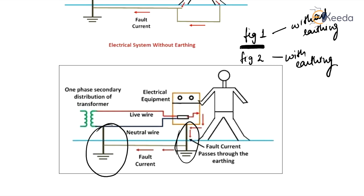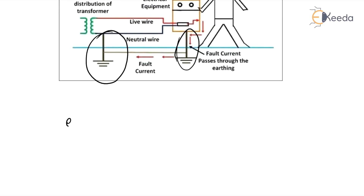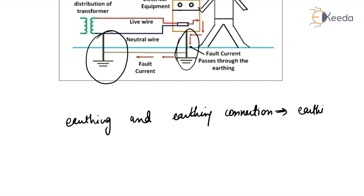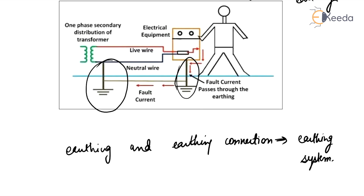At the time of a fault, the earth mat conductors rise to a voltage equal to the resistance of the earth mat multiplied by the ground fault current. This contacting assembly is called earthing. The metallic conductors connecting the parts of the installation with the earthing are called electrical connections. Together, earthing and earthing connections are called the earthing system.